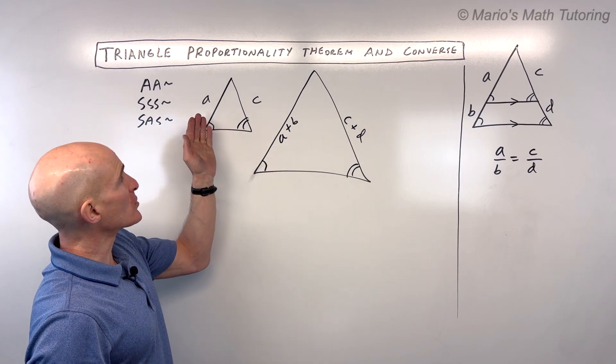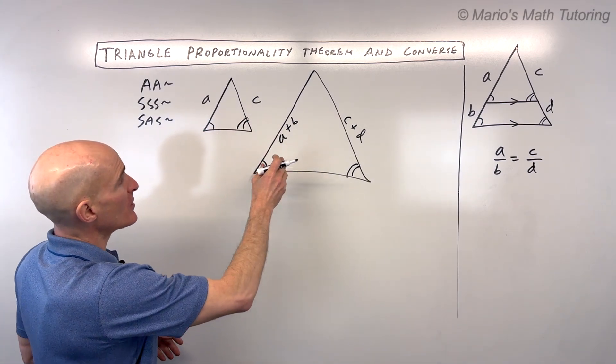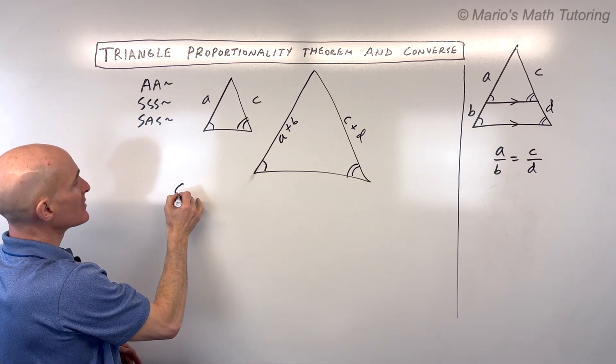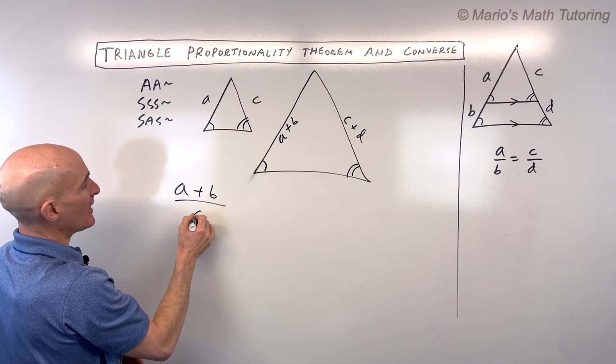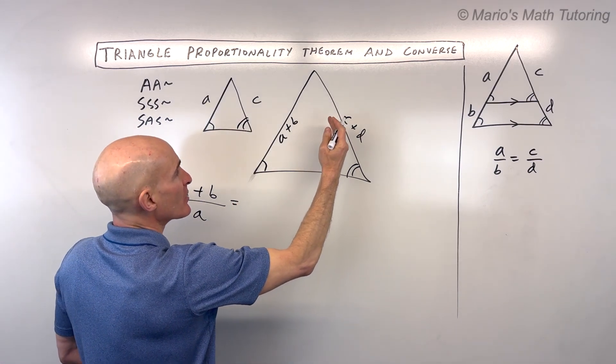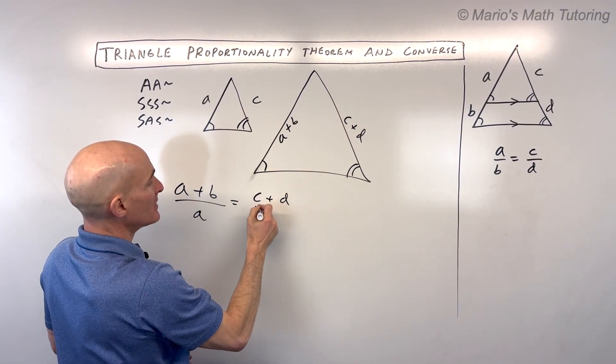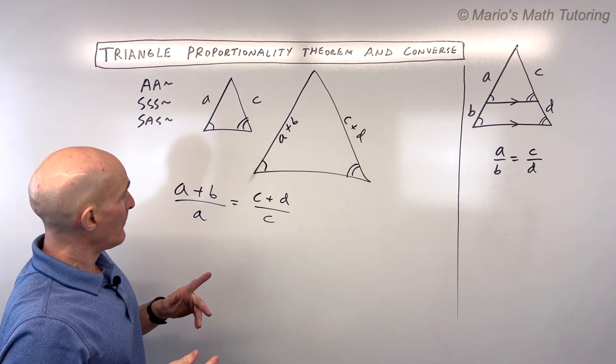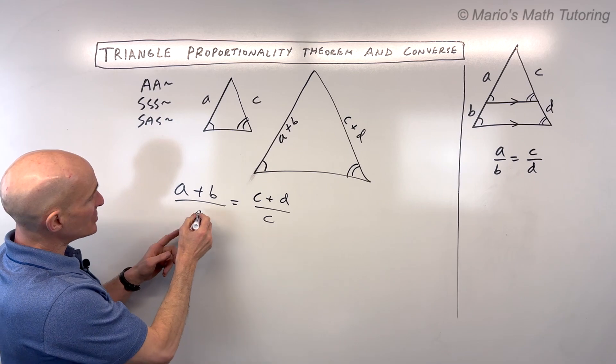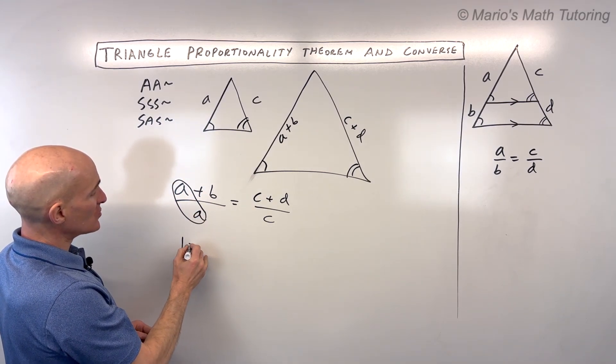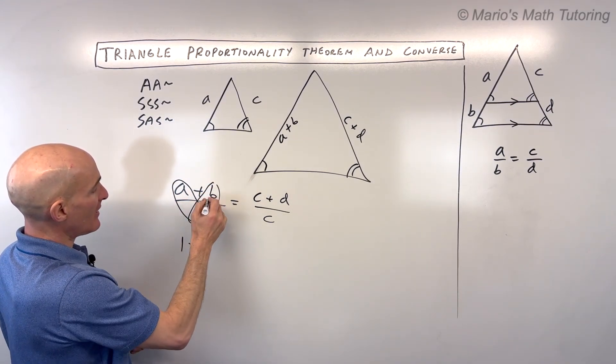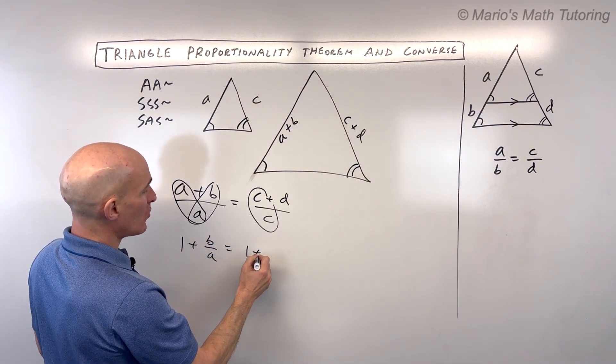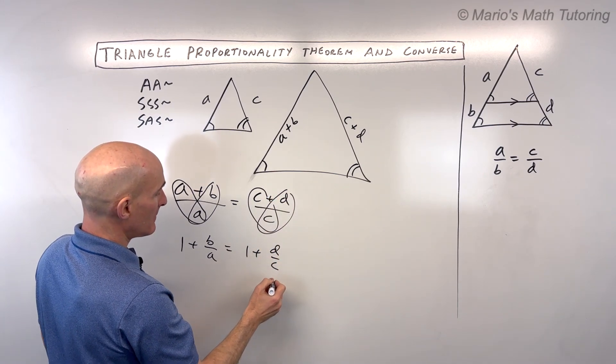That means the corresponding sides are proportional. Now what I'm going to do is match this left side of the big triangle to the left side of the little triangle. Let's write that as A plus B is to A, and that's in the same ratio as the right side of this big triangle is to the right side of this little triangle. So now we have a proportion. But look what we can do here. We can split this up. We could say A divided by A, which is 1, plus B divided by A, is equal to C divided by C, which is 1, plus D divided by C.